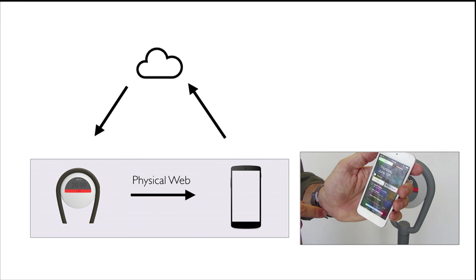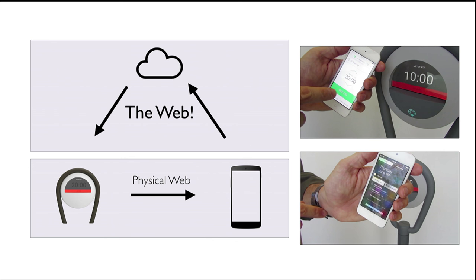I want to stress one critical point: what we're talking about with the Physical Web is the ability to find the URL on the phone and then take you to a web page — that's our job. People ask me, 'Scott, what's your SDK?' And I say, we don't have one. We just get you to a web page. It's up to you to go from there. You just take a beacon and slap it up and you're done.